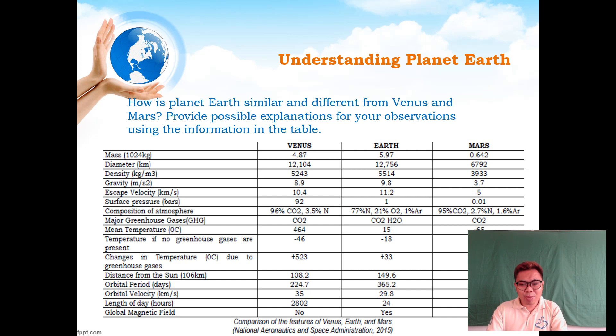Venus and Earth are almost the same in mass, diameter, density, gravity, and escape velocity. That's why sometimes they are referred to as twin planets. In terms of surface pressure in units of bars, we have Earth and Mars with the same value. In composition of atmosphere, Venus and Mars have the same content of carbon dioxide, unlike Earth which is 77% nitrogen. The major greenhouse gases have almost the same presence of carbon dioxide. Distance from the sun: we have almost close distance from the sun, ranging 16 kilometers apart.